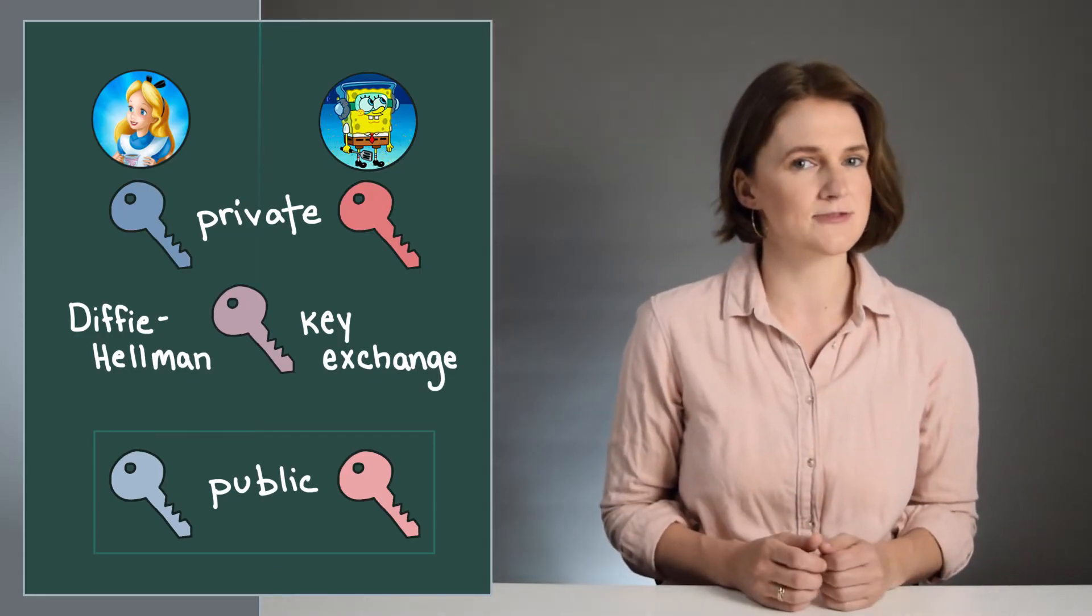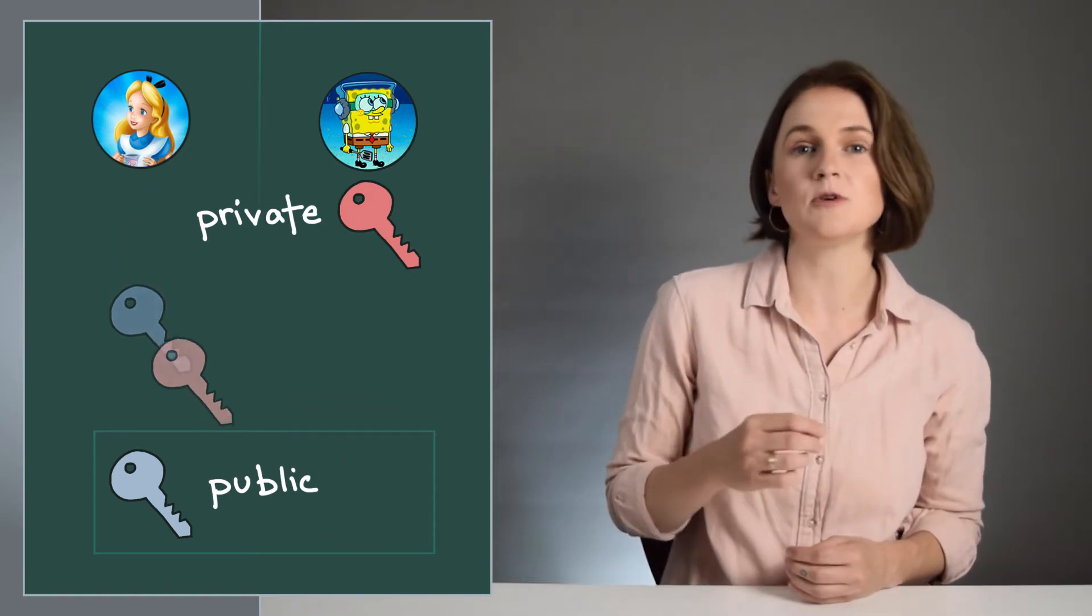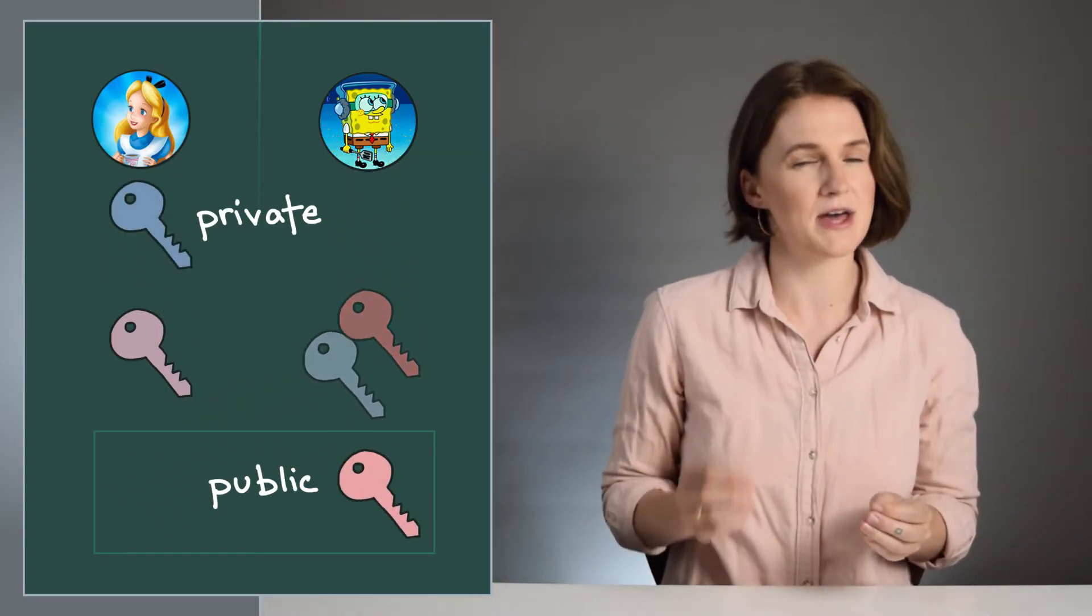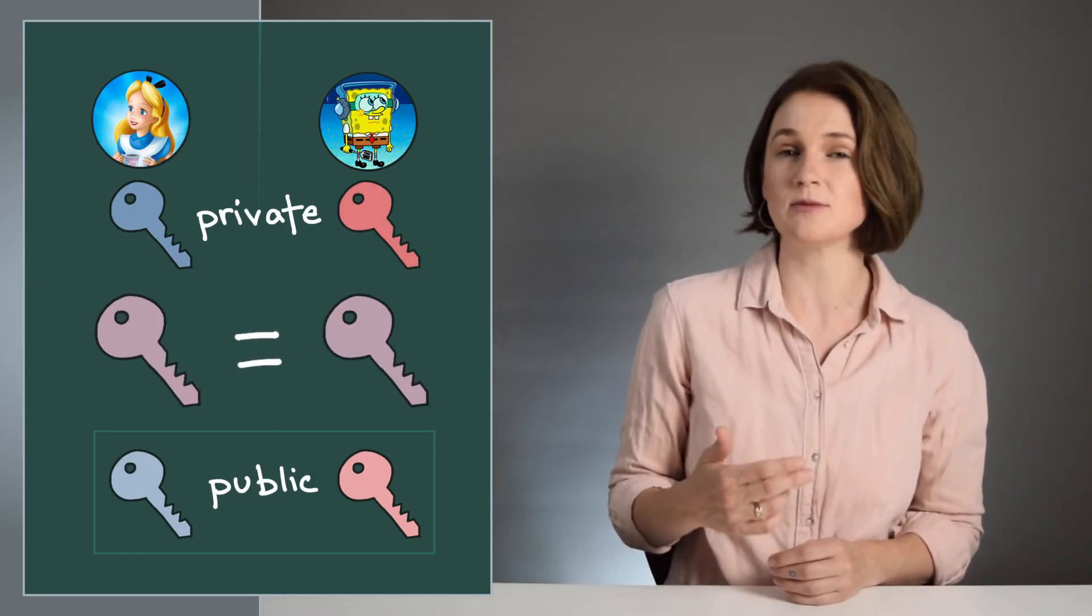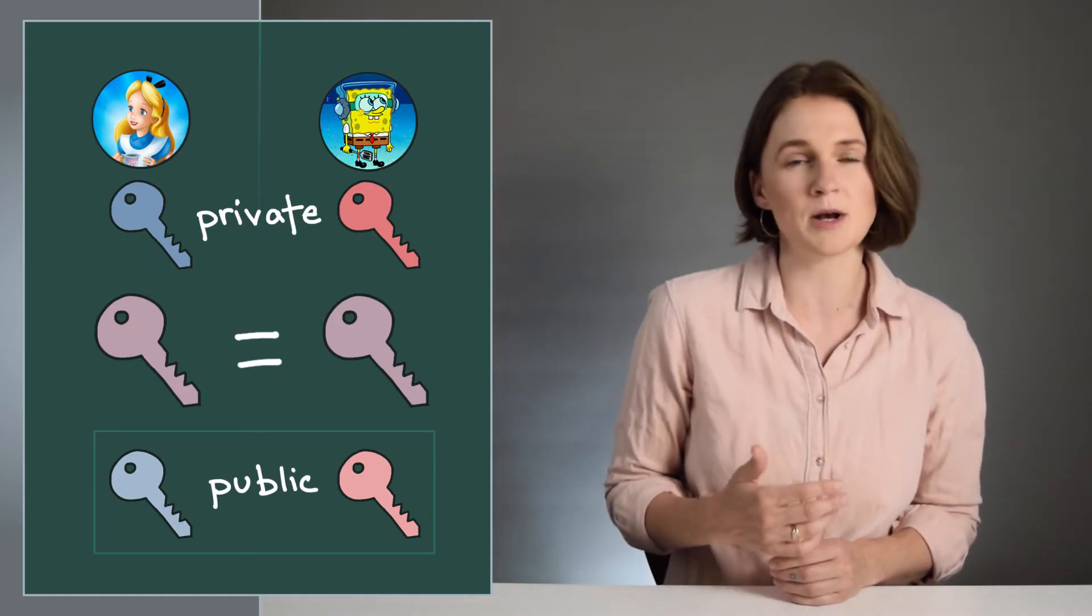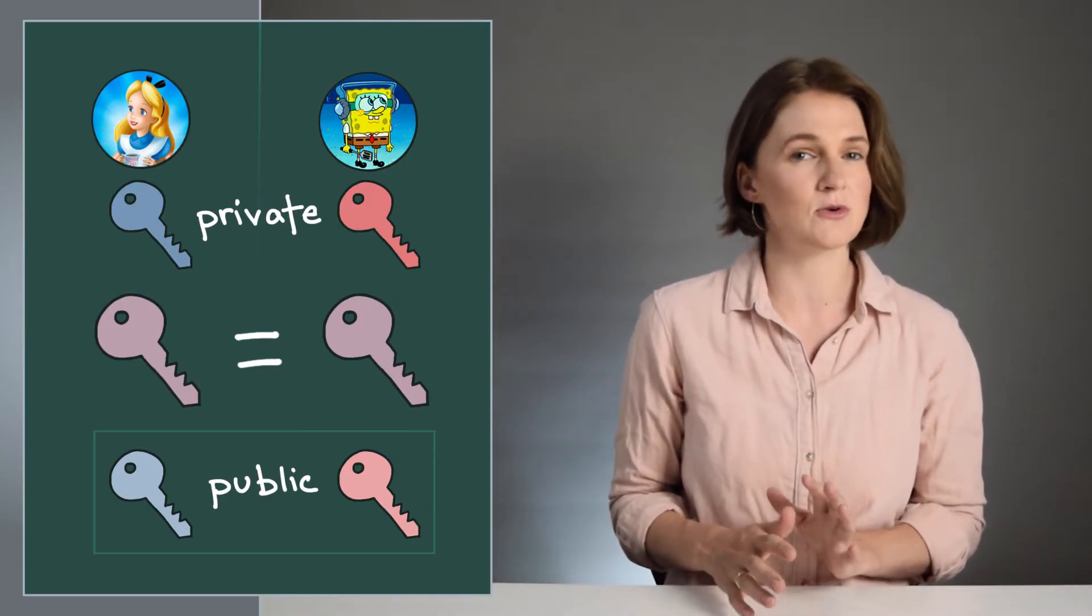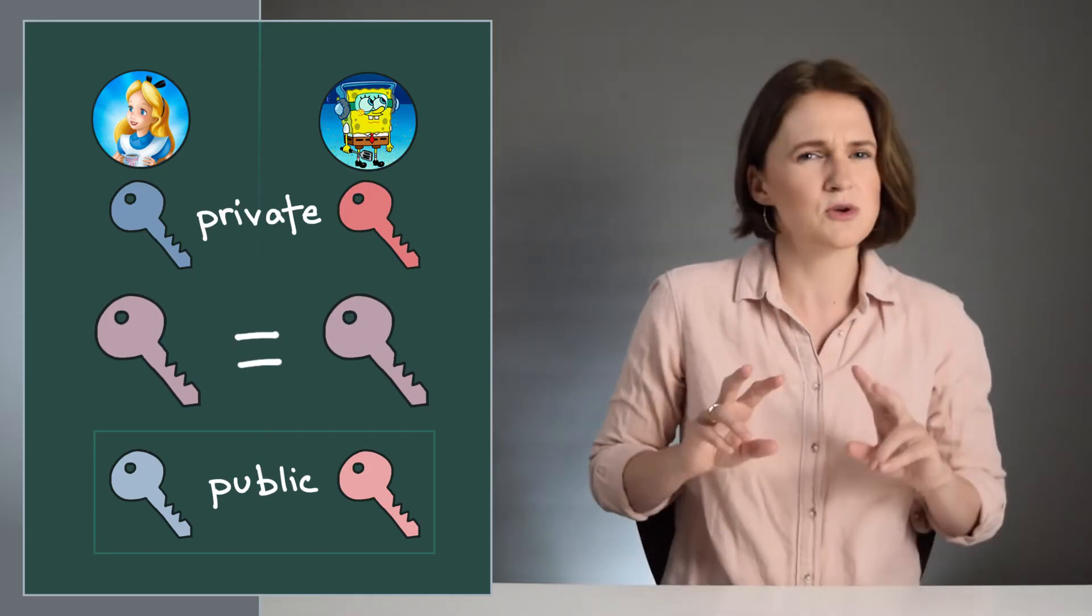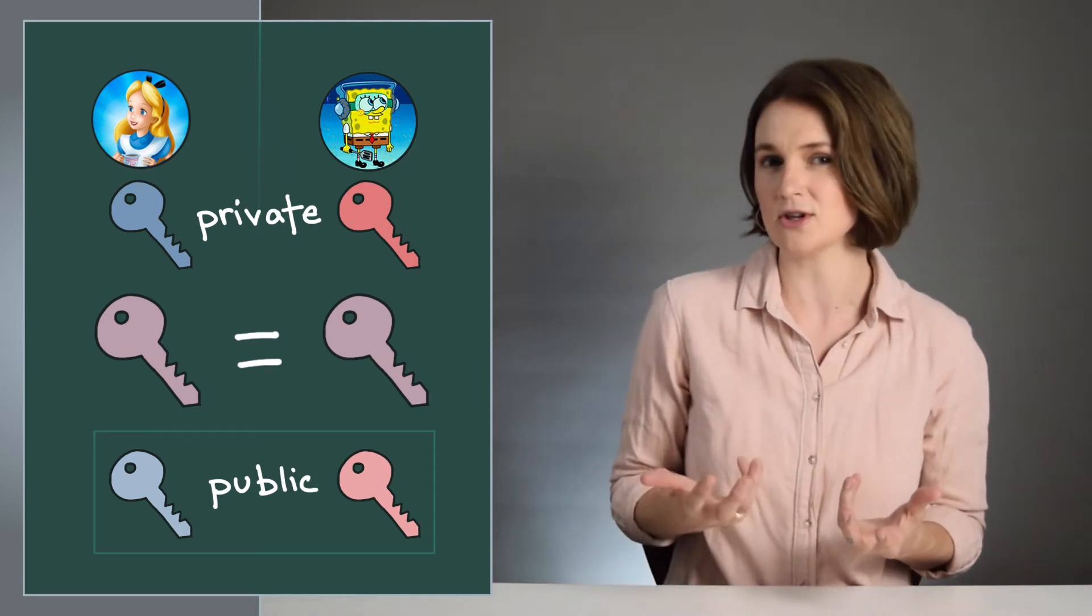I'll put links in the description for longer detailed explanations, but here's the one sentence version. Alice combines, in a specific way, her private key with Bob's public key to make a new key. Bob combines his private key with Alice's public key and ends up with the same key, a shared secret key which can be used to encrypt and decrypt messages. It's a secret because it basically requires one party's private information to create. The public information alone does not suffice to learn the shared secret. Remember, the keys are just numbers, so combining them is really just a mathematical function that takes two numbers and produces a new one.